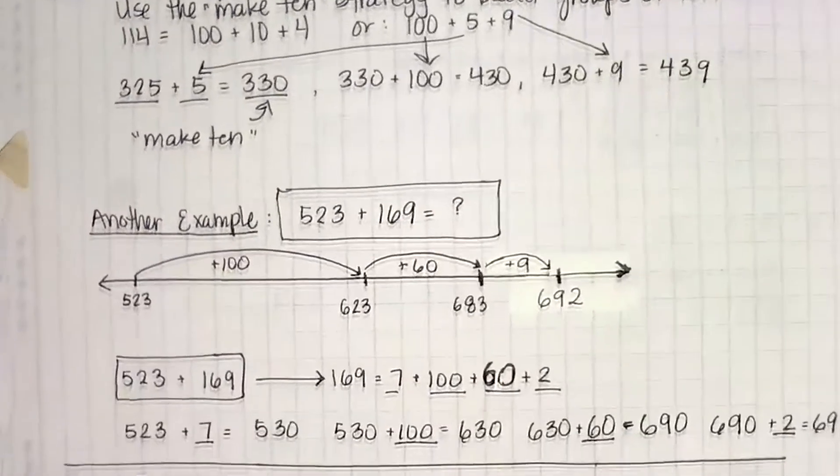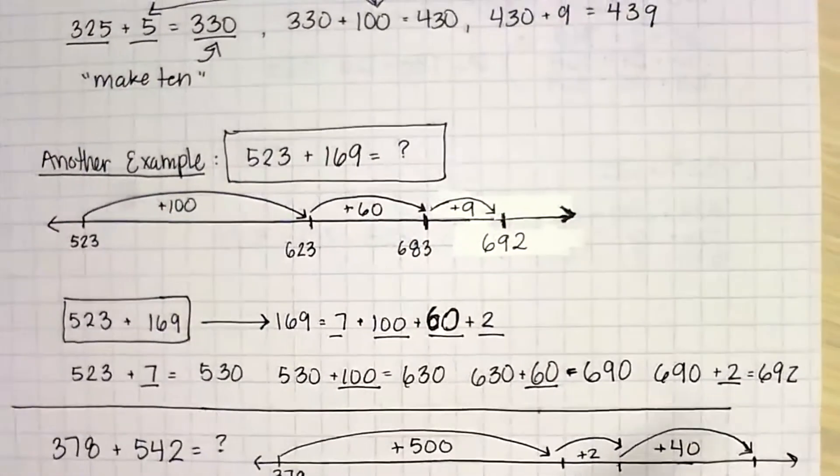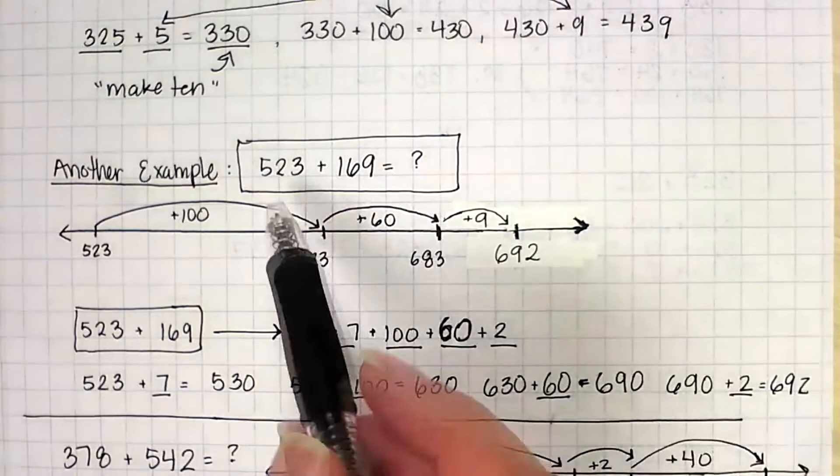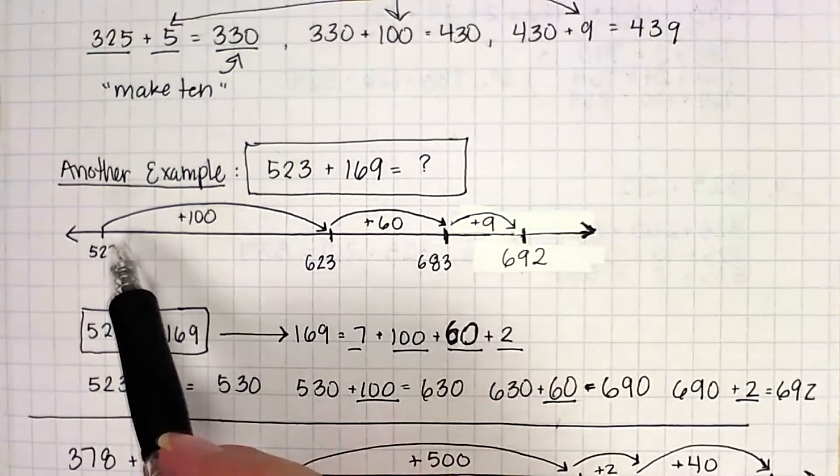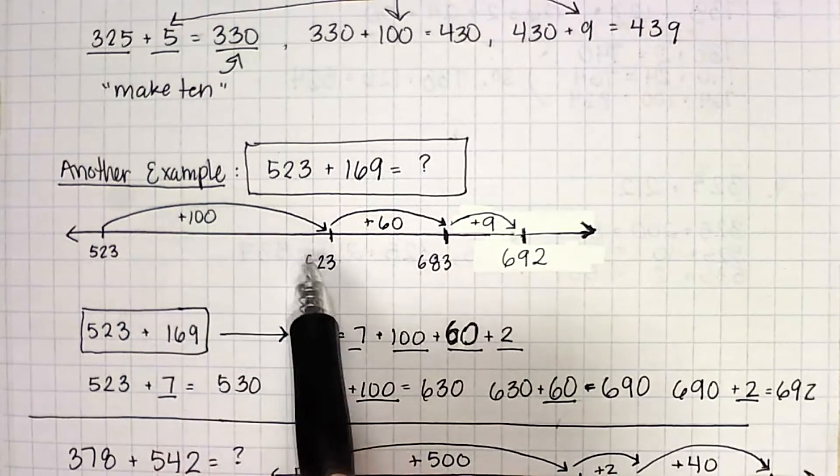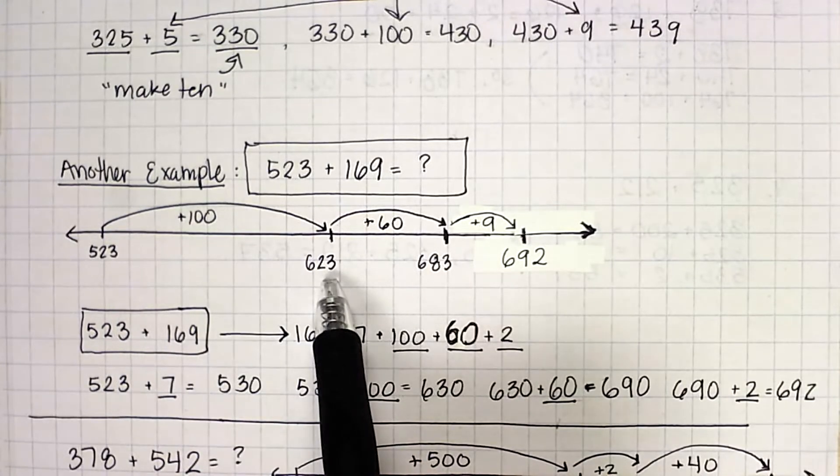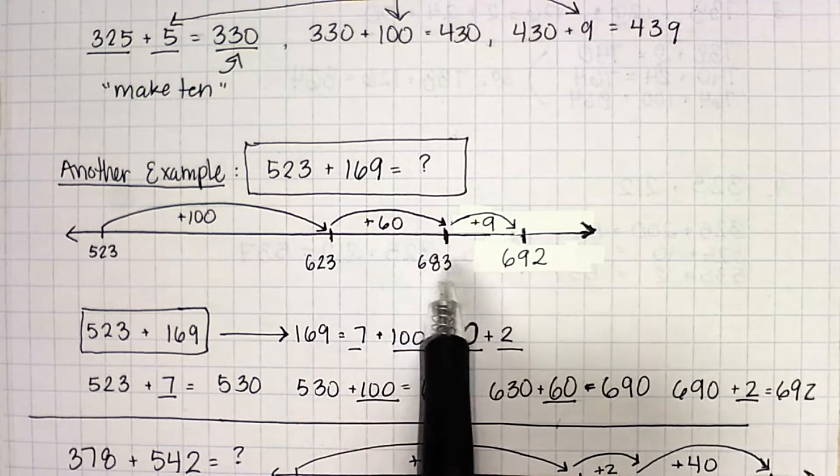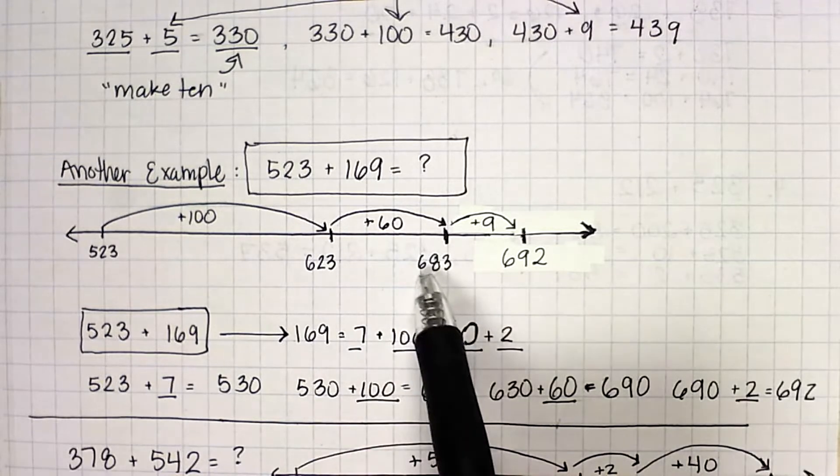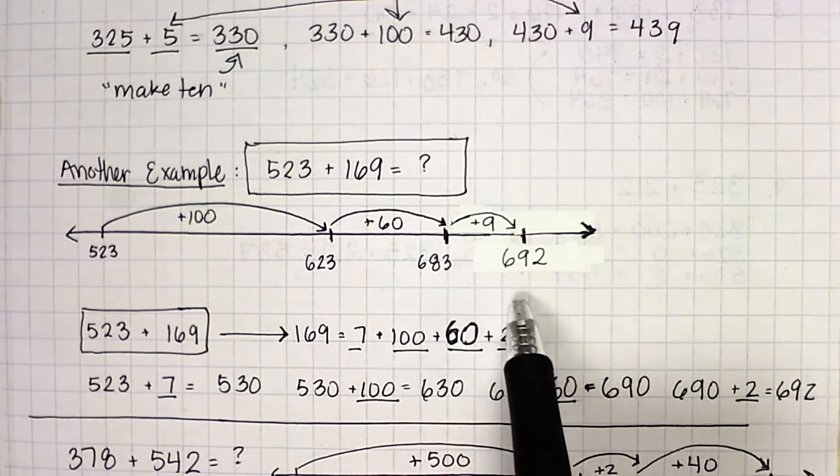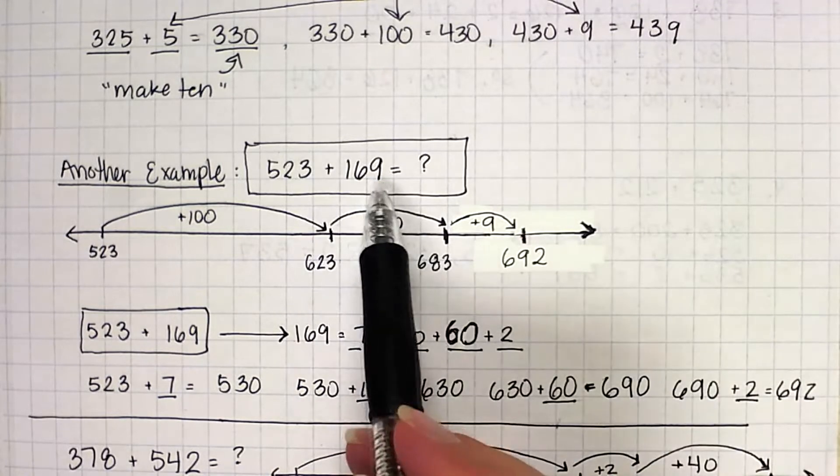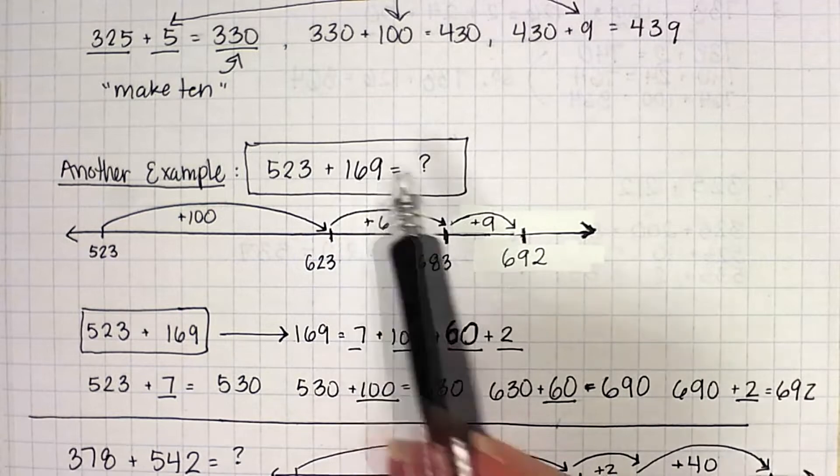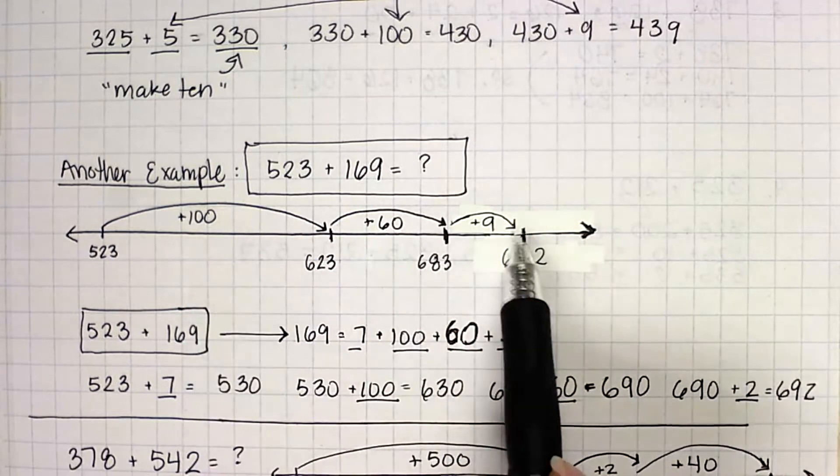So let's take a look at another example, and I use both strategies here. So if I had 523 plus 169. So 523 plus 100 gets me to 623. 623 plus 60 gets me to 683. And 683 plus 9 gets me to 692. So here we're using place value 100 plus 60 plus 9.